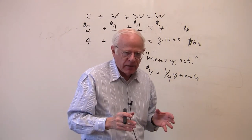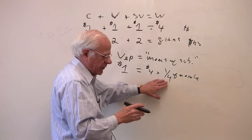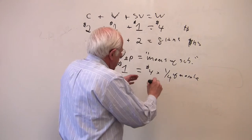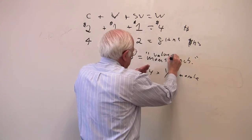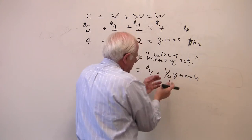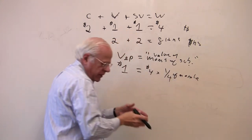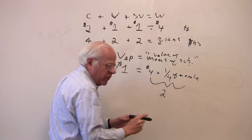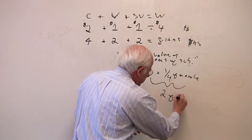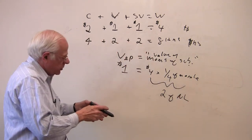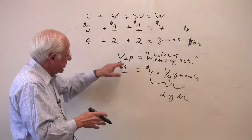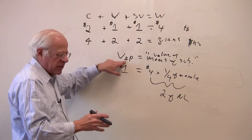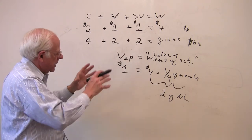How much labor does it take to produce a quarter of an apple? Well, it takes two hours. So the value of the means of subsistence, this quarter of an apple, the total value, it takes two hours of what? Necessary labor to produce the means of subsistence, to reproduce the labor power, which the worker is going to sell the next day to the capitalists.